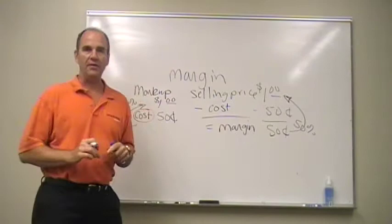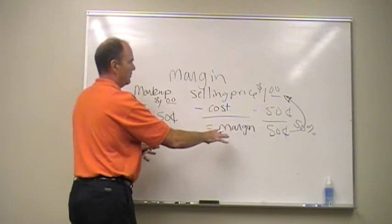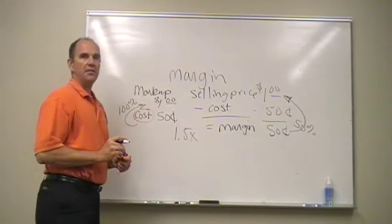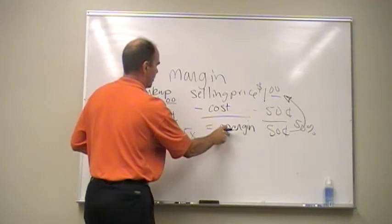So, if I was to say markup something and get a 50% margin, students will say, I just take it times 1.5. That would give me a 50% markup and give me a 50% margin. That is wrong. Wrong, wrong, wrong, wrong, wrong. Don't ever do that. If I want a 50% margin, I have to mark it up 100%.